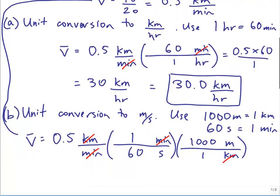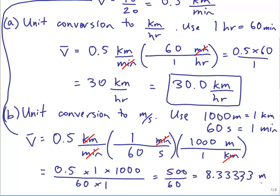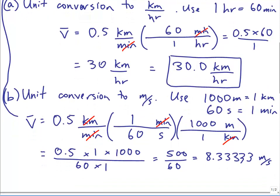So I'm multiplying 0.5 times 1 times 1,000, and dividing by 60 times 1. So that's equal to 500 over 60 meters per second. That's 8.333, lots of 3's in my calculator, meters per second. Round to three significant digits, is 8.33 meters per second.